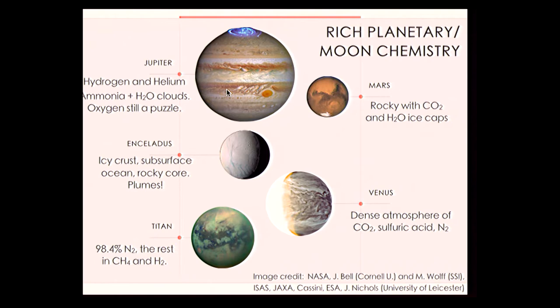Jupiter's beautiful band-like structures come from clouds of ammonia and water vapor. Our understanding of oxygen on Jupiter is still a puzzle, at least until the Juno mission tells us more. The previous mission, Galileo, fell into a dry spot in the atmosphere and measured no water vapor, which is weird because Jupiter has extra carbon and extra nitrogen — those things usually go together. Hopefully Juno will tell us whether it was a fluky dry spot or whether Jupiter is actually oxygen-poor, because that alone would rewrite the book of planet formation.